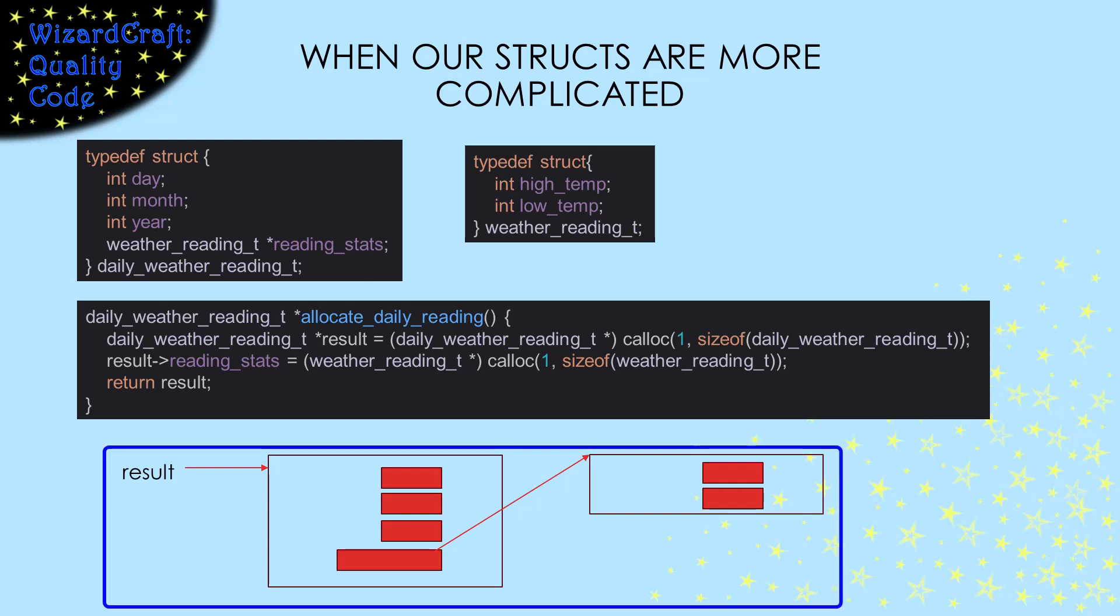what we've allocated looks like this. We are returning a pointer to a struct that has a month, day, and year, and a pointer to another struct that contains our two weather readings.